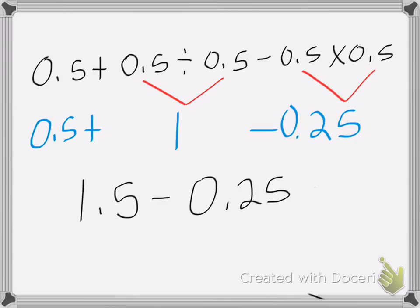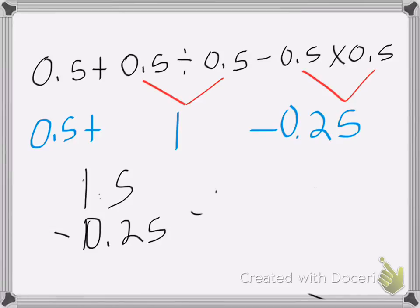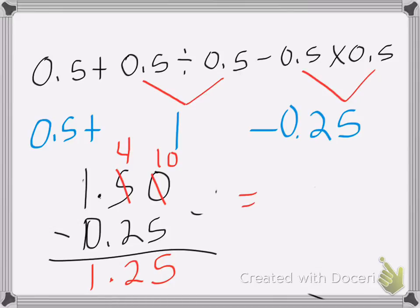Okay, let's go ahead and subtract that. 1.5 minus 0.25. Need to add a 0. Borrow from the 5. 5 becomes a 4. 0 becomes a 10. 10 minus 5 is 5. 4 minus 2 is 2. Decimal point comes straight down. 1 minus nothing is 1. So my answer to this problem is 1.25.